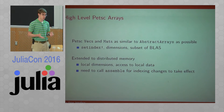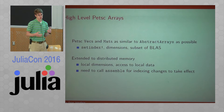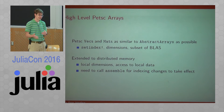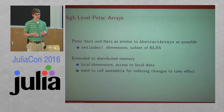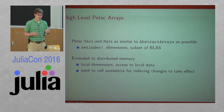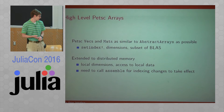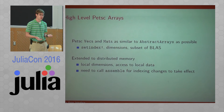Instead, PETSc caches the value somewhere in memory, and then there's an assemble function with two parts. The first starts sending all the data to all the other processes using non-blocking communications, so it can return right away and your code can continue doing other things. Then there's an assemble-end function which waits for everything to finish, and then the matrix is ready to use for a Krylov solve. The idea is to overlap communication and computation, which is really important for scalability. The high-level interface also contains an assemble function to do all of this at once, which is useful for prototyping small examples.